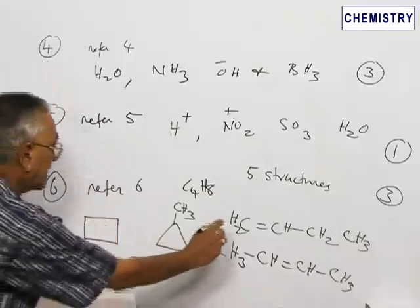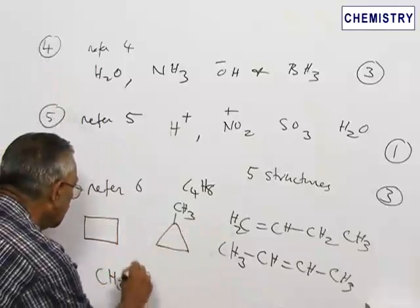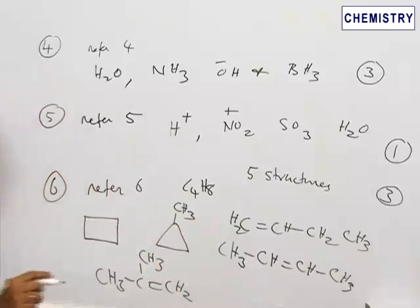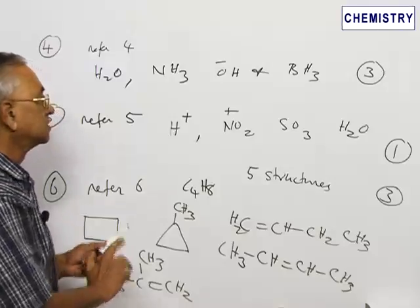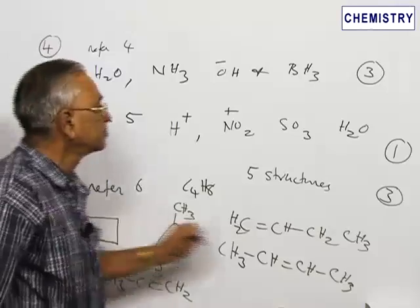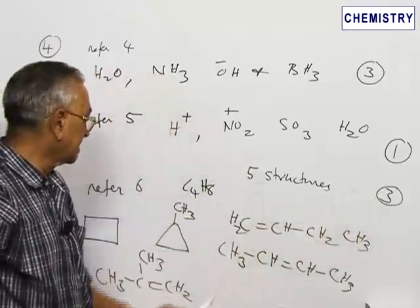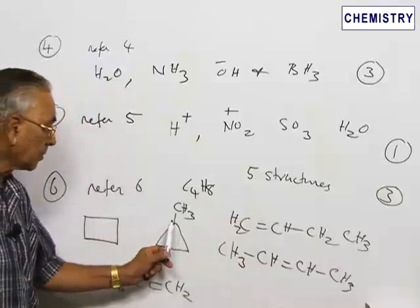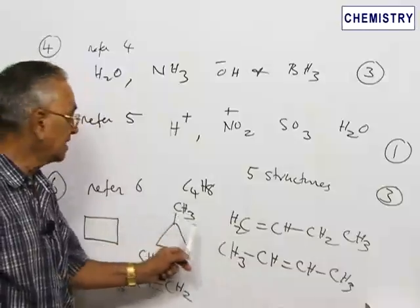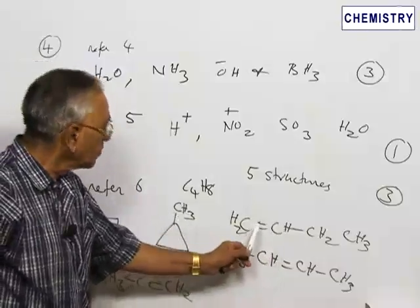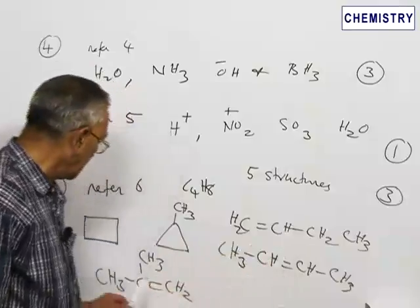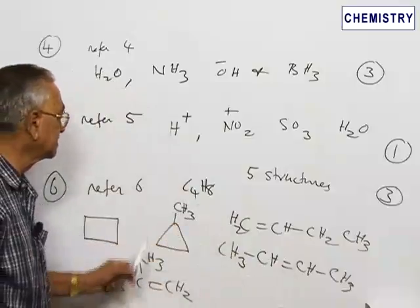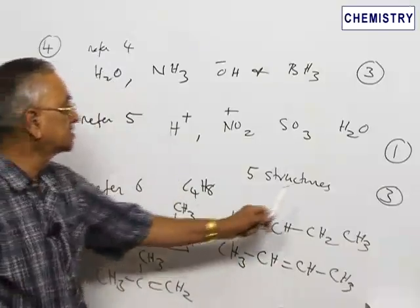The fifth structure is CH₂=C(CH₃)₂, which is isobutylene, also called 2-methylpropene. So the correct answer for question number 6 is option 3, corresponding to 5 structures: cyclobutane, methylcyclopropane, 1-butene, 2-butene, and isobutylene.